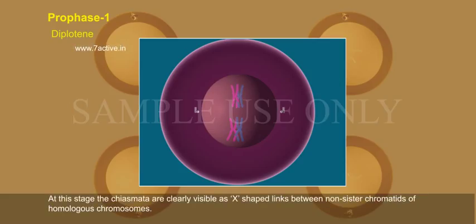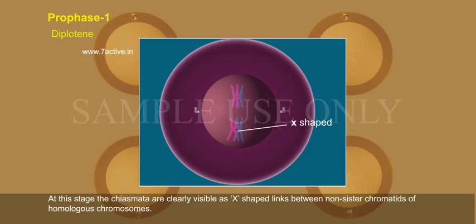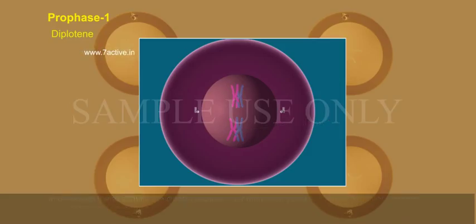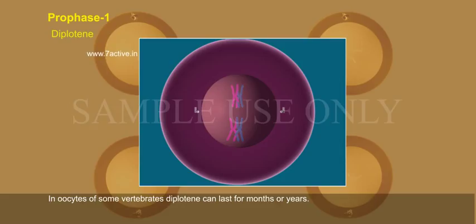At this stage, the chiasmata are clearly visible as X-shaped links between non-sister chromatids of homologous chromosomes. In oocytes of some vertebrates, Diplotene can last for months or years.